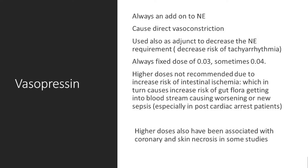Vasopressin is also used in patients with variceal bleeding. The dose of vasopressin is a fixed dose of 0.03 units — some places allow up to 0.04, but it's always fixed. When you go to higher levels — say 0.05 or 0.06 — studies show it causes mesenteric ischemia, decreased blood flow to your intestine, as well as certain cardiac malperfusion. Because of these two reasons — increased intestinal ischemia and decreased cardiac perfusion — vasopressin is kept at a fixed dose of 0.03 units.